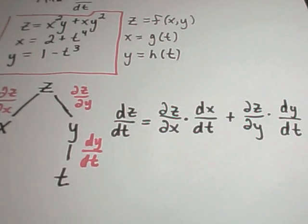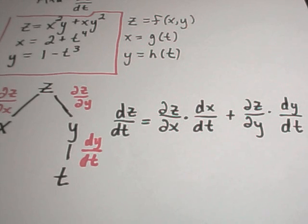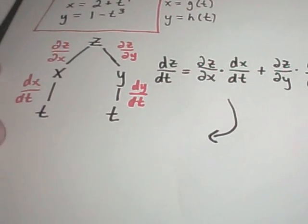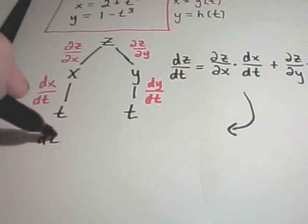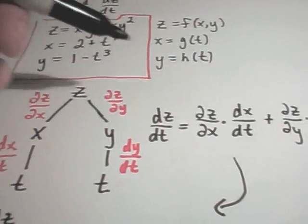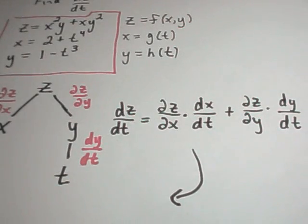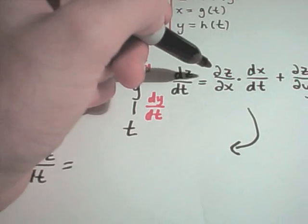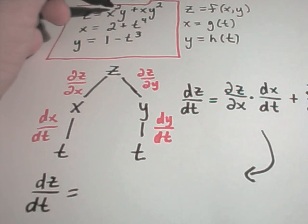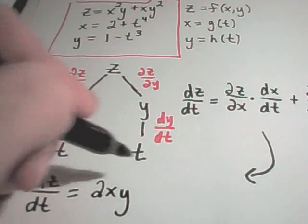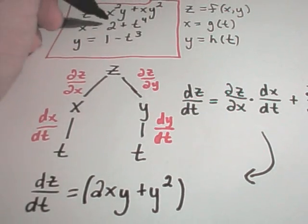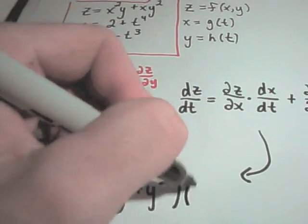Using the functions given here — z equals x squared times y plus xy squared — let's fill in this formula. The derivative of z with respect to t: first, the partial of z with respect to x means I'm treating x as a variable and y as a constant, so I get 2xy plus y squared. Then I take the derivative of x with respect to t, which is simply 4t cubed.